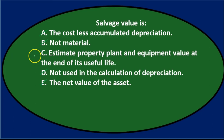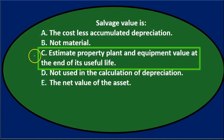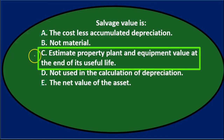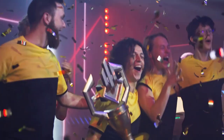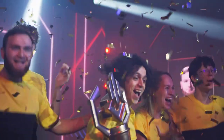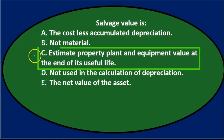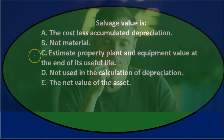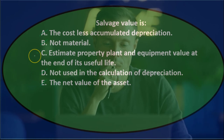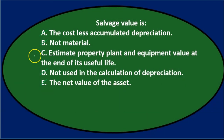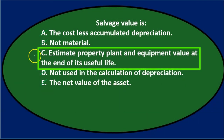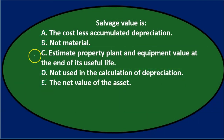So we're left with C. Question and answer: Salvage value is C — estimated property, plant, and equipment value at the end of its useful life. That means we're looking at what we think the property, plant, and equipment will be worth and therefore be sold for at the end of the time that we use it — its useful life.